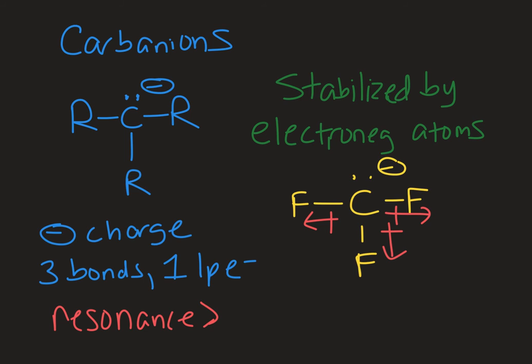When it comes to the substitution of carbanions and their relative stability, the order is actually flipped from what we see with carbocations and radicals. That's because carbons are not very electronegative and they're not providing any stability by being next door because they're not pulling electron density away to stabilize that negative charge.